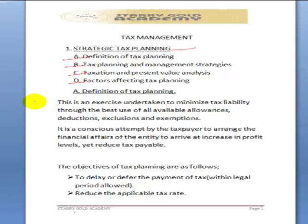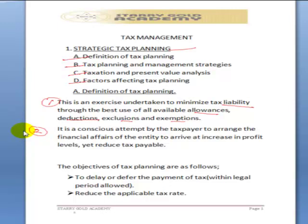Let's now take what we mean by tax planning. We have two definitions. The first one says: this is an exercise undertaken to minimize tax liability through the best use of all available allowances, deductions, exclusions, and exemptions. The second definition says: it is a conscious attempt by the taxpayer to arrange the financial affairs of the entity to arrive at increased profit levels yet reduce tax payable.